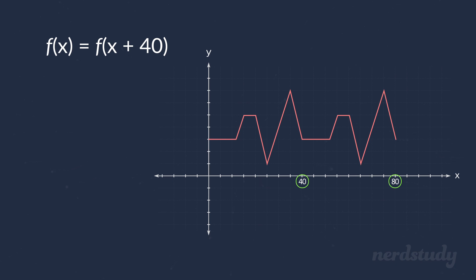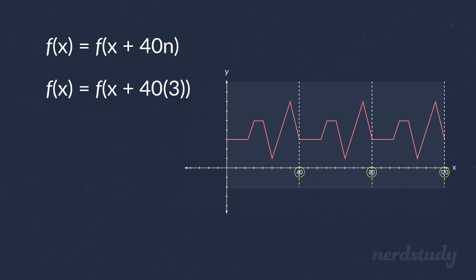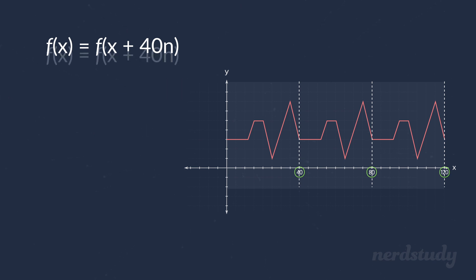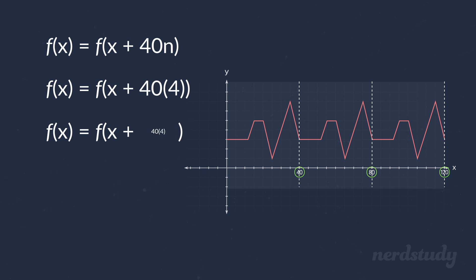Since the same y-value repeats not just 40 units away, but also 80 units away, and 120 units away, and so on, we can say that f(x) is equal to f(x + 40n). For example, if n is equal to 3, then we are effectively saying that f(x) is equal to f(x + 120), which we now know to be true. And if n was 4, then we would be saying that f(x) is equal to f(x + 160).